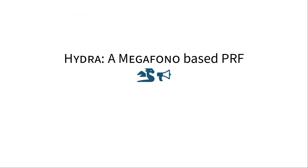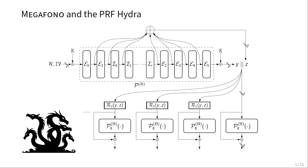Here on the slides you can see PRF Hydra. It looks intimidating at first, but I'll go over its parts in detail. I want to point out some similarities to Syminian: on the top we have the more expensive permutation, which we call the body of the Hydra. The outputs Y and Z are then fed into cheaper permutations, which we call the heads of the Hydra. Similar to Syminian, the outputs of these cheaper permutations are then used as a key stream to encrypt the actual plaintext.